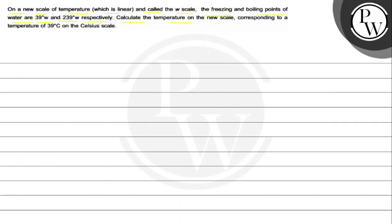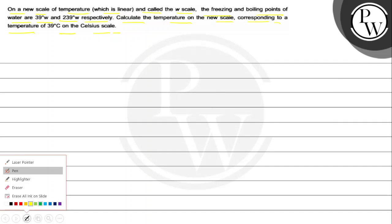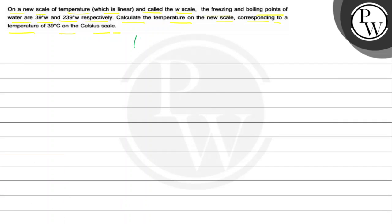Calculate the temperature on the new scale corresponding to a temperature of 39 degrees Celsius on the Celsius scale. The key concept here is thermal expansion — this is a thermal expansion problem.